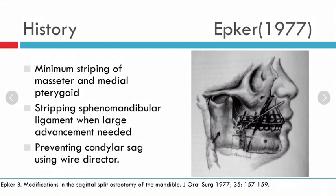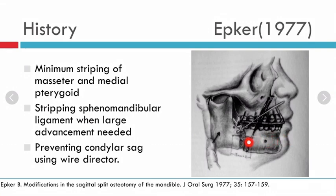Epker also suggested minimum stripping of muscles, and recommended stripping of the sphenomandibular ligament when large advancement is needed. Condylar sag is an important complication: while fixing the mandible, if the condyle is not in the correct position, it gets pulled downward and anteriorly. After the osteotomy, the body segment is positioned according to the surgical plan — advancement or setback — but the ramal segment position must be carefully controlled.